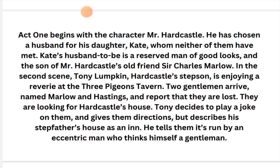Marlowe and Hastings are traveling at night and decide they need to stop somewhere. They go to a club and find Tony there. They ask Tony if he knows where Mr. Hardcastle's house is. Tony sees this as a good opportunity for mischief. Instead of directing them correctly, Tony tells them there is no inn nearby but points them to Hardcastle's house, describing it as a very good inn with many servants and a sweet maid — essentially tricking them into treating Hardcastle's home as a public inn.